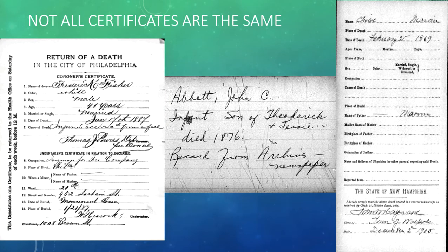Keep in mind that not all death certificates are the same. Here are a couple of examples. In the middle, I have one that's on a three-by-five card — this was taken out of a newspaper. So all I have on here is the name of the deceased, some parents' names, and a death year. Nothing more than that.